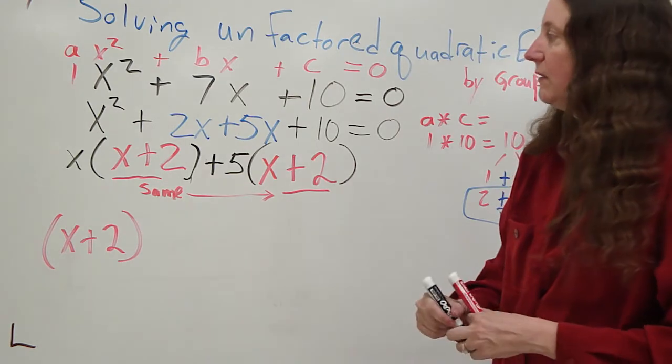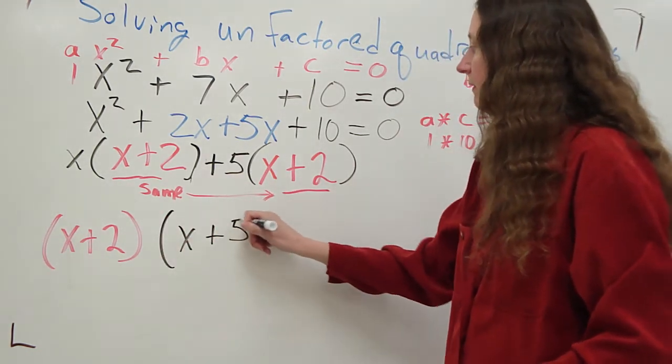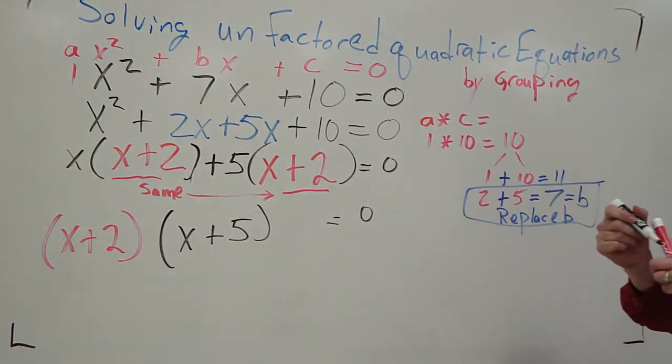I bring that out into its own set of parentheses, and outside of that set of parentheses I am left with the x plus 5. This all still equals the same 0 that's over here.